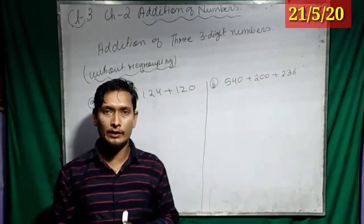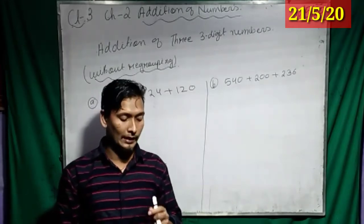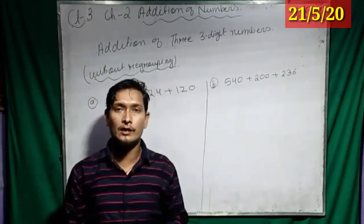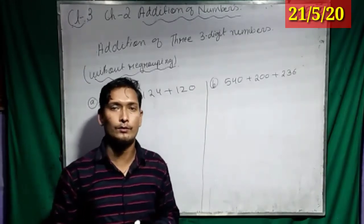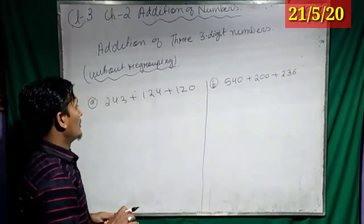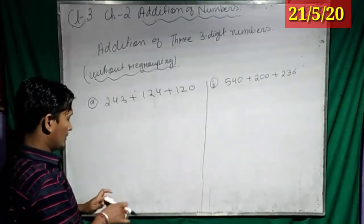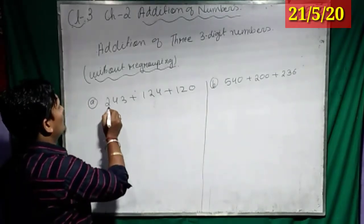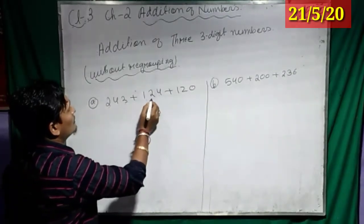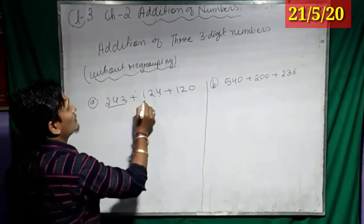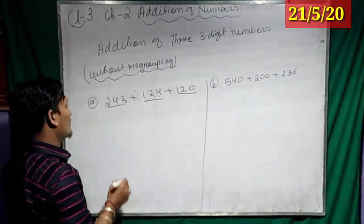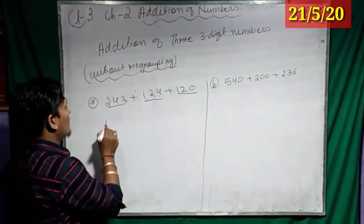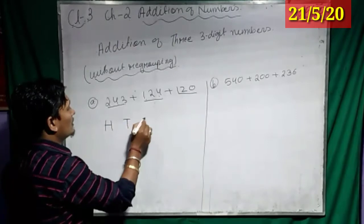You know now what do you mean by without regrouping? So, let us see how to arrange numbers if 3-digit numbers are there. First of all, 3-digit means you know 3 numbers: 1-2-3, 1-2-3, and 3 numbers, yes or no? And what we have to do? We have to write H-T-O.